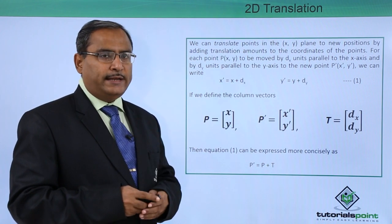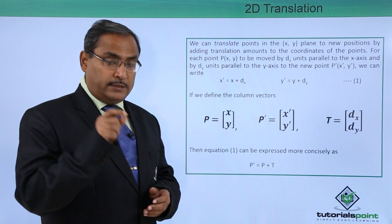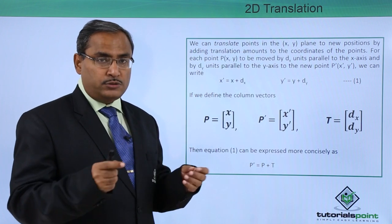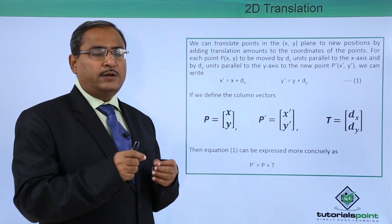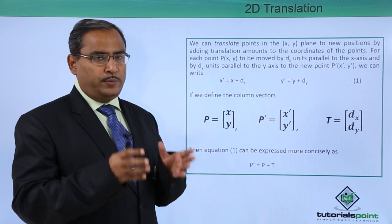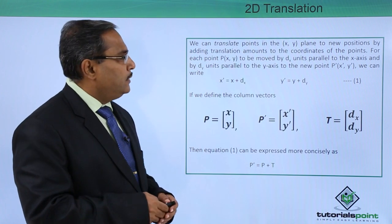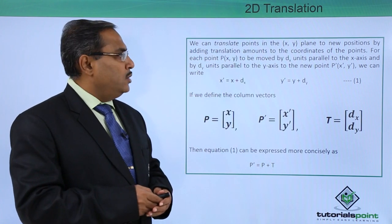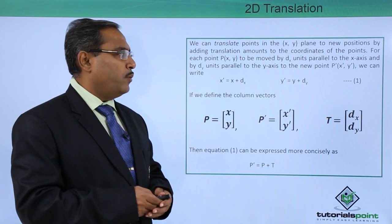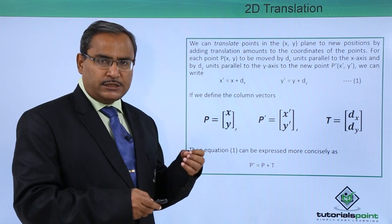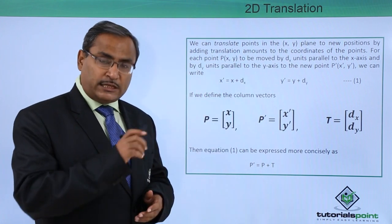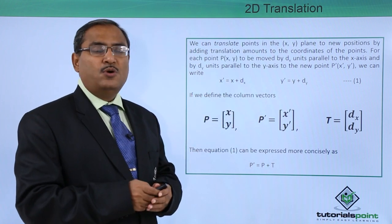We are having one point at coordinate x, y and we shall add the respective translation amounts to x and translation amounts to y. The amounts may be different; it is not mandatory that the translation amount for x and y will be the same. We can obtain a new coordinate after translation. For each point P(x, y) to be moved by dx units parallel to the x axis and dy units parallel to the y axis to the new point P'(x', y'), we write: x' = x + dx and y' = y + dy.